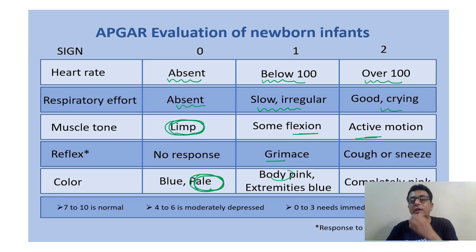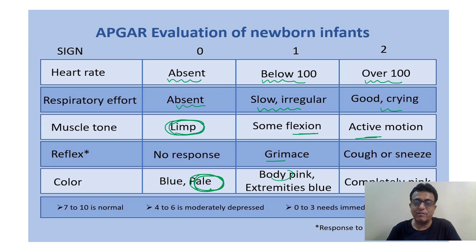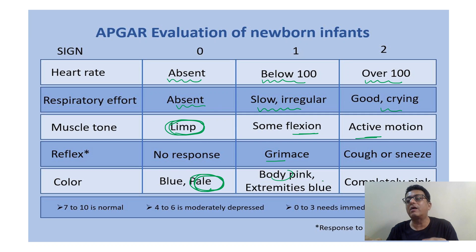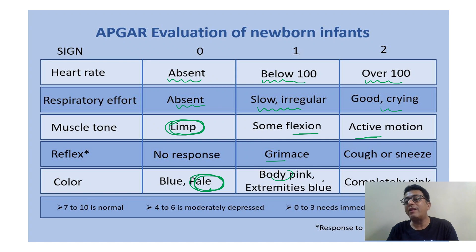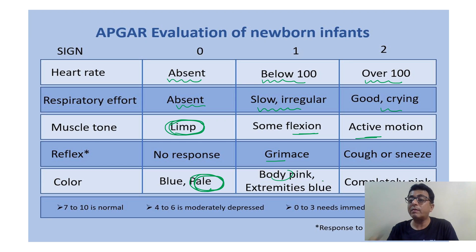You can answer only if you remember each and every parameter of APGAR score, and this question comes repeatedly in the exam. So you need to remember APGAR score, antenatal screening of Down syndrome markers, response to iron in iron deficiency anemia, and poor and good prognostic factors of AML and ALL. These are all memory-based questions — if you have the memory, you can answer.